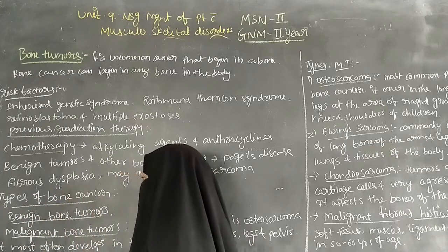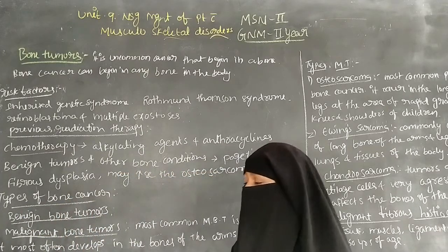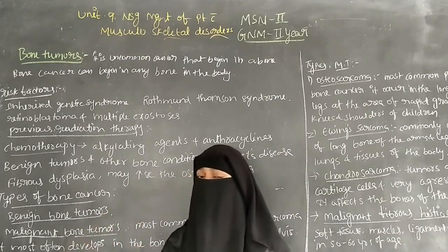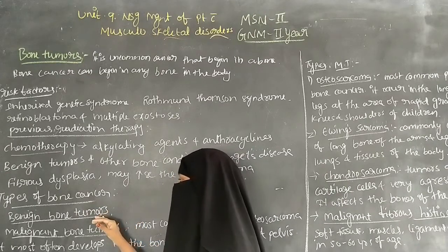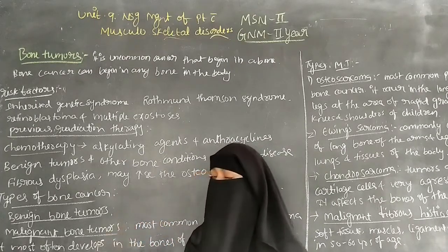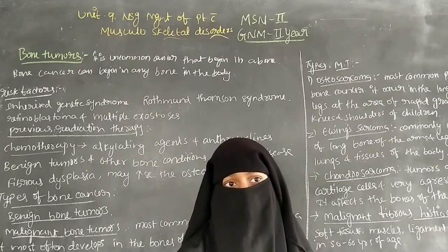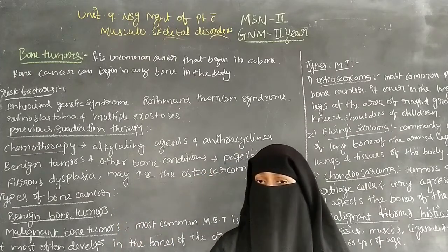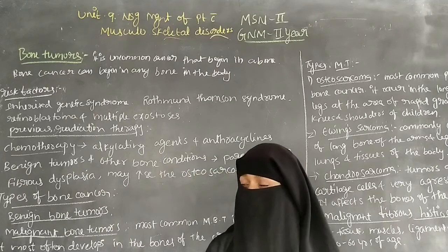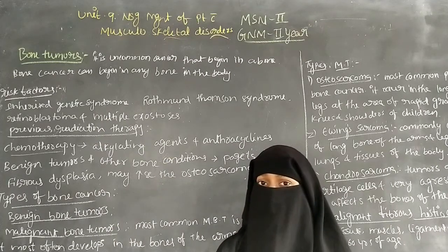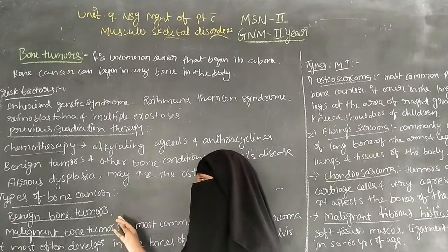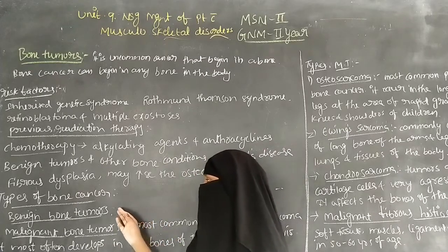The types of bone cancer include benign bone tumors, malignant bone tumors, and metastatic bone tumors. Benign bone tumors are localized to a particular part of the bone, cannot spread to other parts of the body, and can be treated by surgery to remove the tumor.